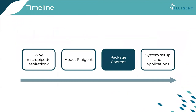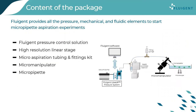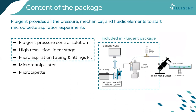Now that we've covered the advantages of micropipette aspiration and introduced our company, let's look at the package content. The micropipette aspiration setup consists of a microfluidic flow controller, reservoir and high-resolution linear stage, tubing and fluidics to connect the reservoir to the micromanipulator, and a microscope for live visualization. The package provides all pressure, mechanical, and fluidic elements to start micropipette aspiration. We also researched and can suggest the ideal micromanipulator and micropipettes.